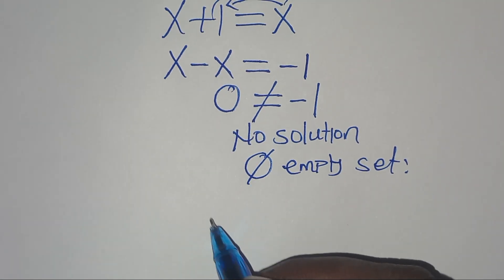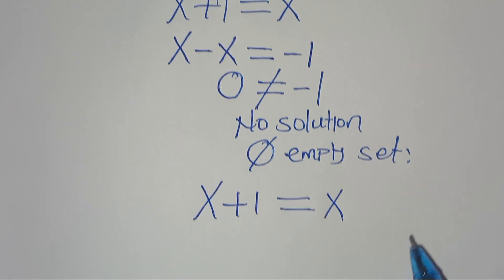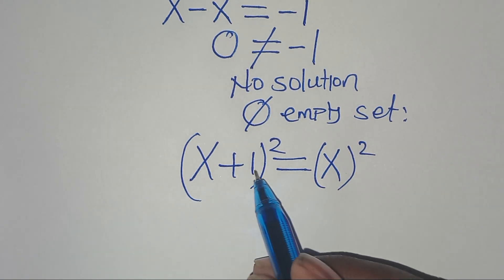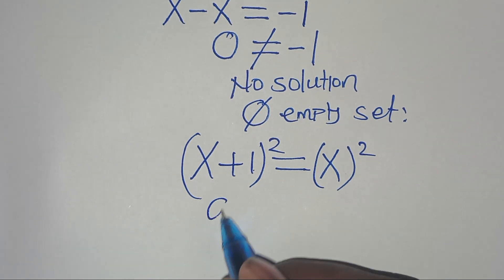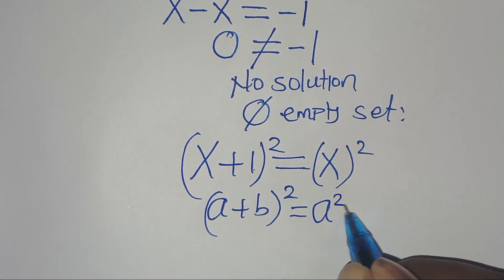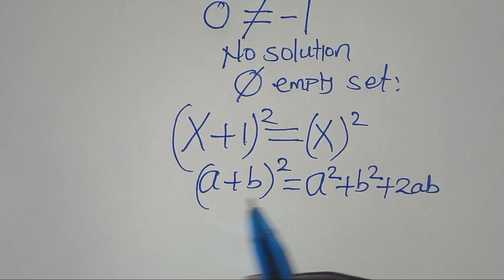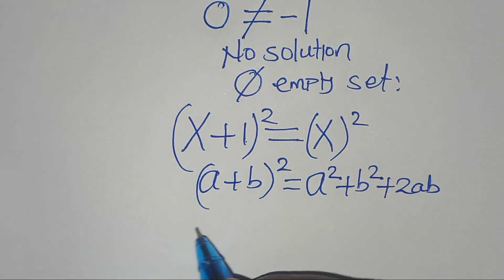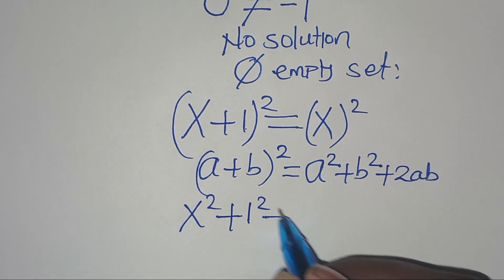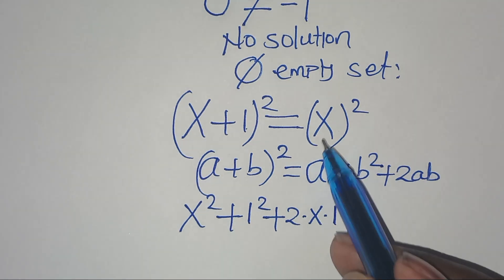We can also apply another method. We have x plus 1, this is equal to x. Let's square both sides, so that now x plus 1 to the power of 2. This is in the form of a plus b to the power of 2, which is the same as a squared plus b squared plus 2ab. Applying this algebraic identity, we have x squared plus 1 squared, then plus 2 times x multiplying by 1, this is equal to x squared.